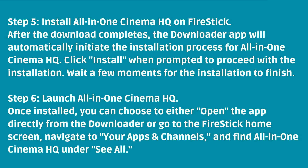Step 6: Launch All-in-One Cinema HQ. Once installed, you can choose to either open the app directly from the Downloader, or go to the Fire Stick home screen, navigate to your apps and channels, and find All-in-One Cinema HQ under See All.